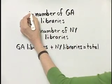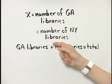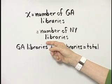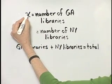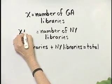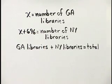So let's let X be the number of public libraries in Georgia. And then how can we represent the number of public libraries in New York? 696 more than this, so that's X plus 696. Very important for you to understand.